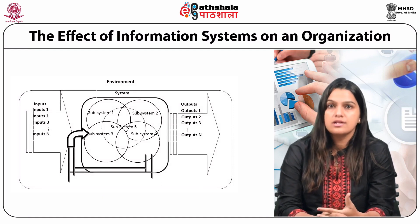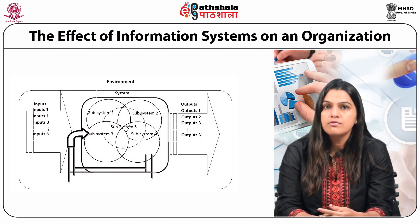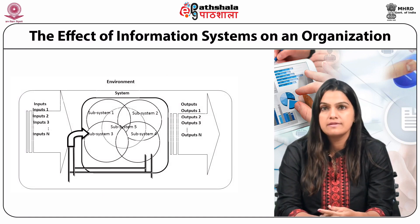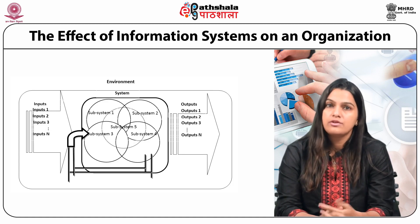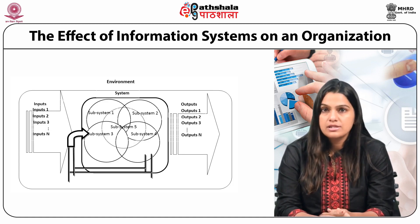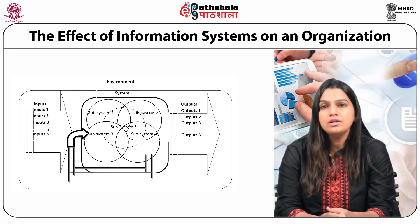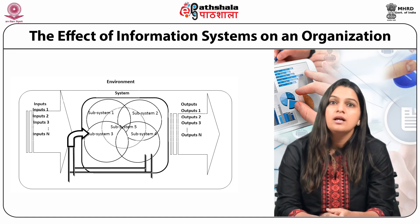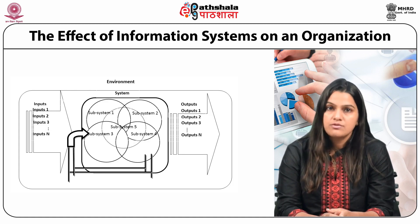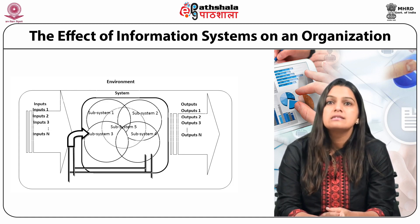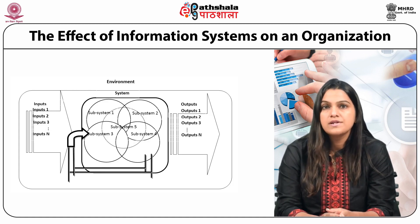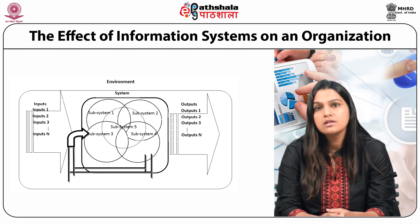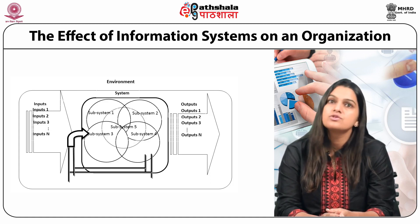The effect of information systems on an organization: every organization has one or more information systems for its various management levels. These systems have always existed. Their goal consists of retrieving daily operational data which can then be processed and used to prepare reports that respond to management needs. Managers at all levels must make frequent choices, selecting from a number of possibilities, not only to attain organizational objectives but also to operate, control, plan and supervise.